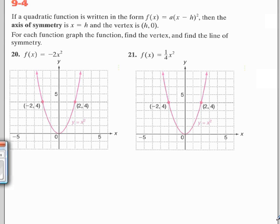For numbers 20 to 23, we're starting with the parent graph y equals x squared, which is a graph of a parabola, these red graphs. They are the graphs of y equals x squared.